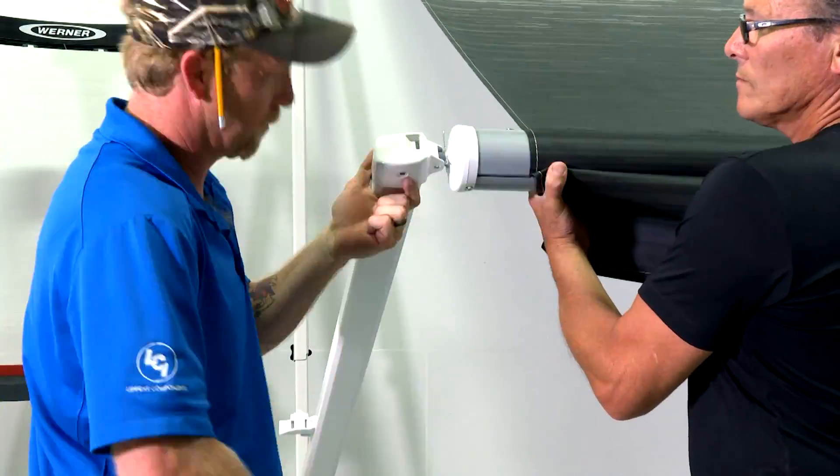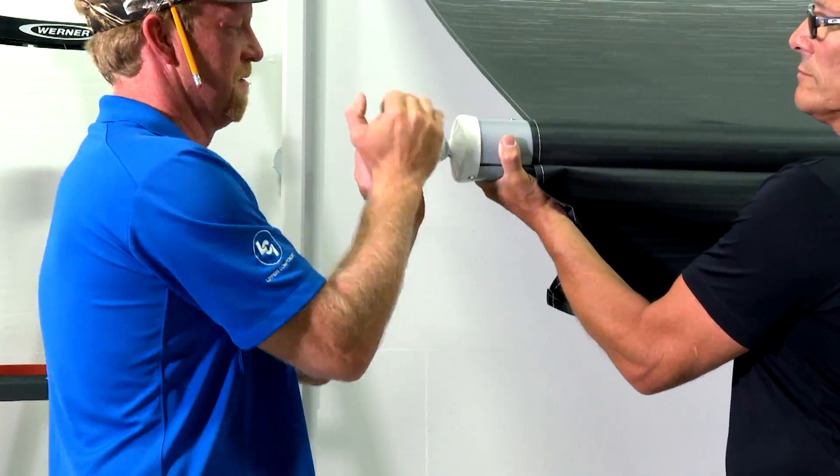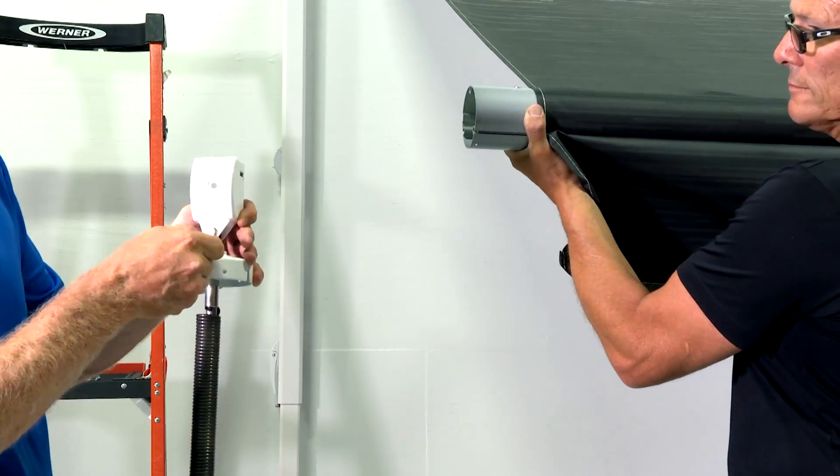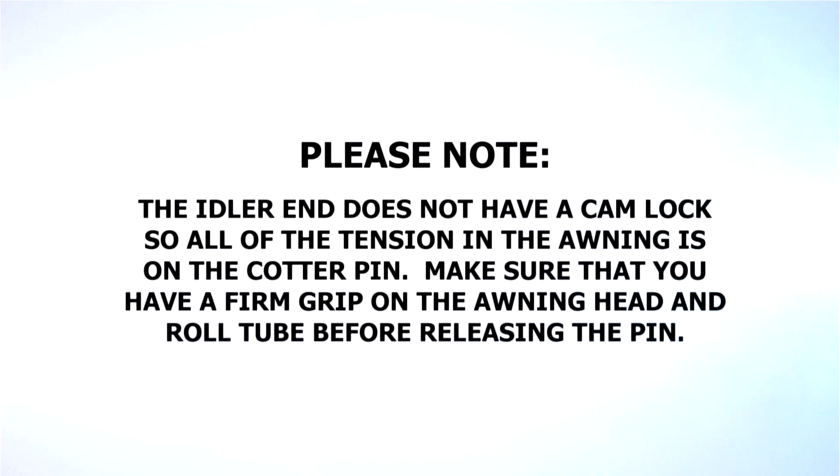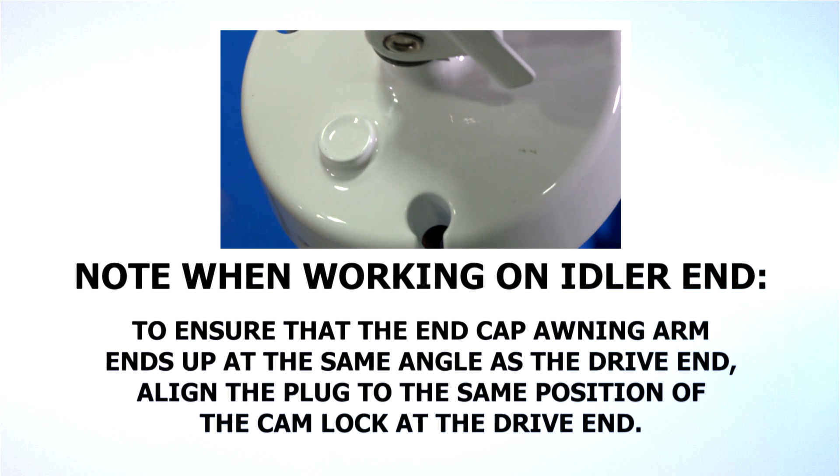You can now go to the idler end of the awning and repeat the steps to remove the end cap, spring assembly, and awning arm and replace with new hardware. Please note, the idler end does not have a cam lock, so all of the tension in the awning is on the cotter pin. Make sure that you have a firm grip on the awning head and roll tube before releasing the pin. Note when working on the idler end, to ensure that the end cap awning arm ends up at the same angle as the drive end, align the plug to the same position of the cam lock at the drive end. This will ensure that the awning arms end up at the same angle on both ends of the awning.